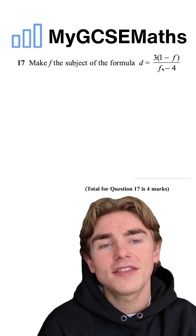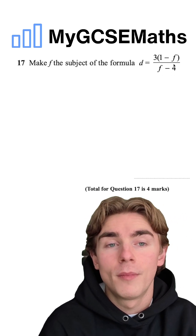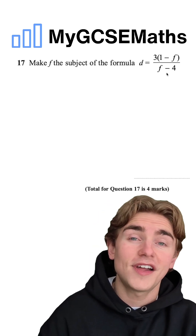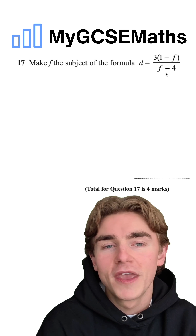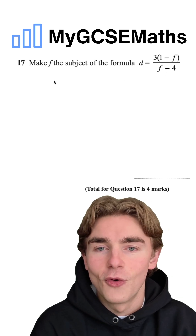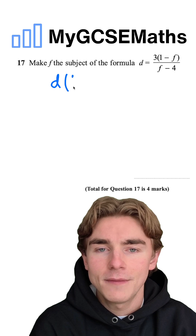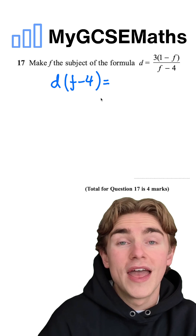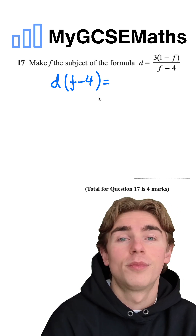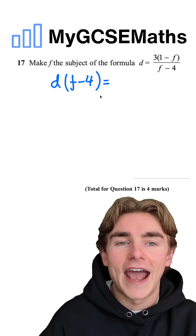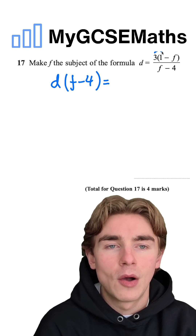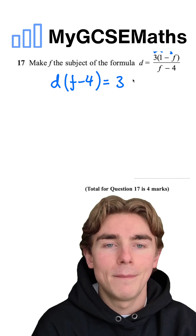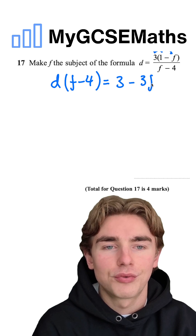Step one: we don't like the fact that we have an f on the bottom of our fraction, so we're going to multiply both sides of our equation by (f minus four) to get rid of it. On the left-hand side we have d times (f minus four), and on the right I'll expand the top: three times one is three, and three times minus f is minus three f.